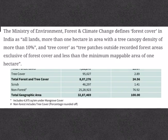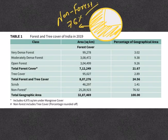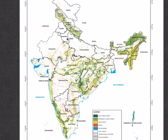Tree cover comprises tree patches outside the recorded forest area, exclusive of forest cover and less than the minimum mappable area of 1 hectare. As per the report, total forest and tree cover together is at 24.56%. The share of scrub is 1.41%, and non-forest is the highest at 76.92% — so non-forest occupies 76% of the total geographical area of India.